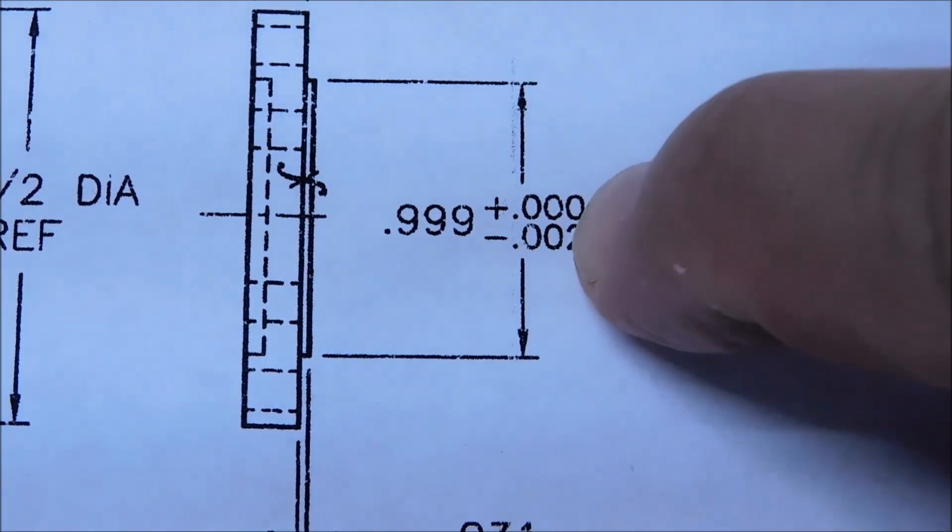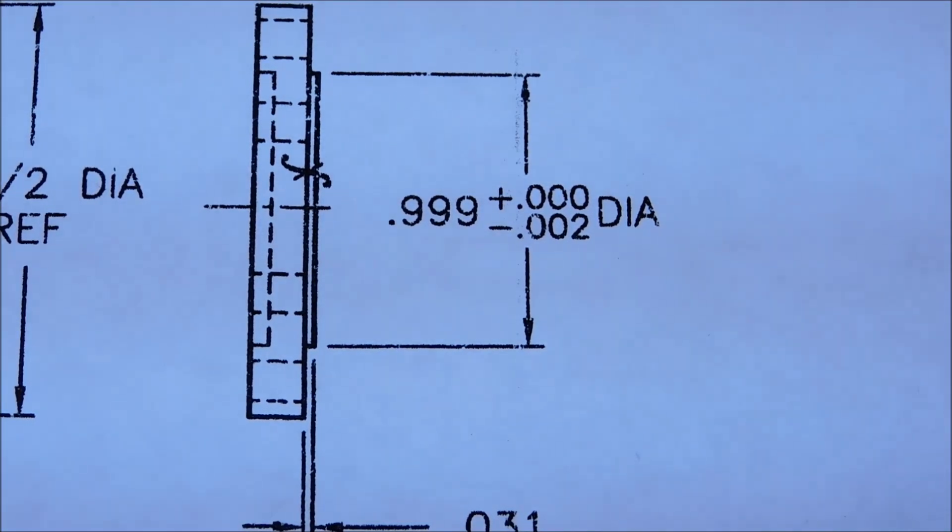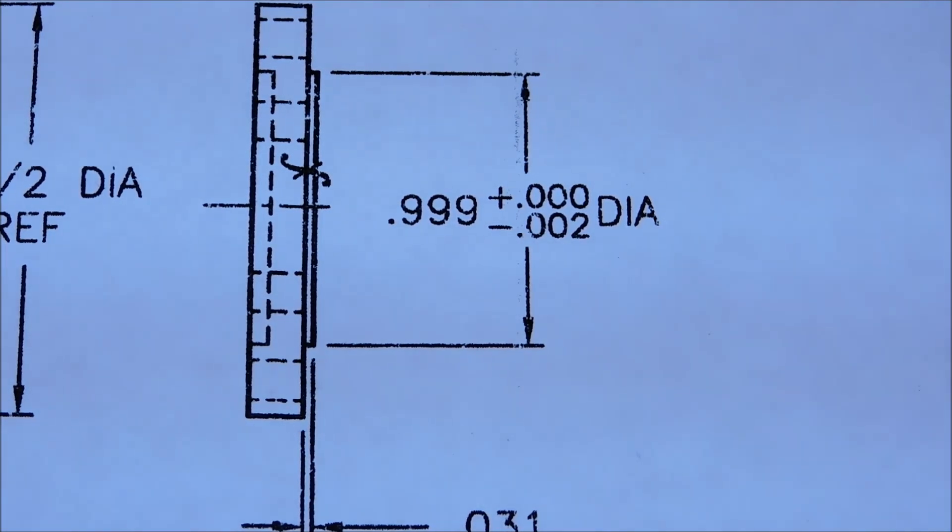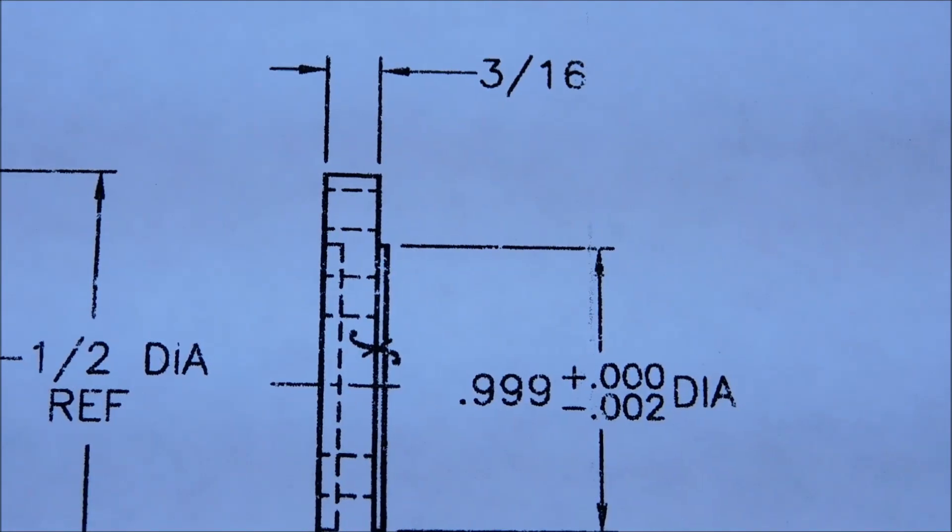This 0.999 minus 0.002 diameter is intended to go down inside the cylinder. Although that's not functionally critical, for alignment purposes it's probably best to keep it close. The 3/16 and the 0.031 stack up to 0.218 on the thickness.